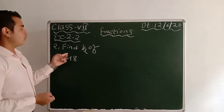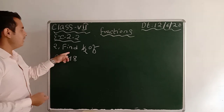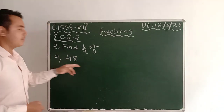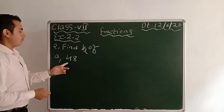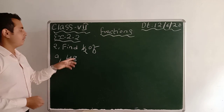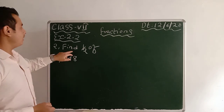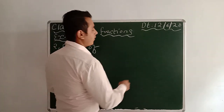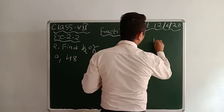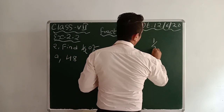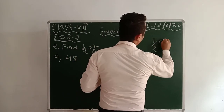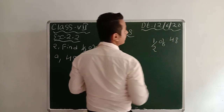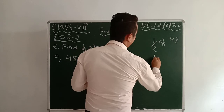Okay, question number 2: Find half of the numbers. Number A — find half of 48. Half of 48 means 1/2 of 48.